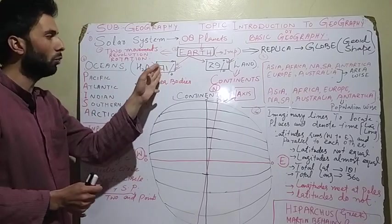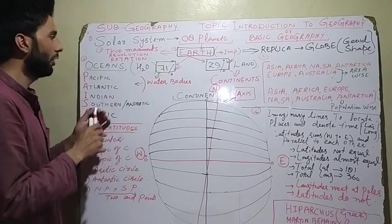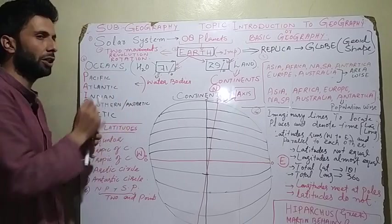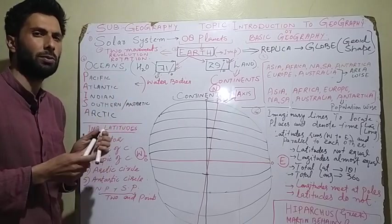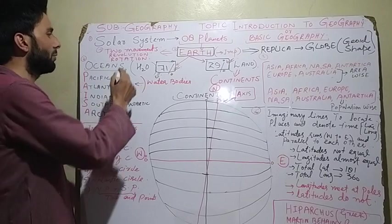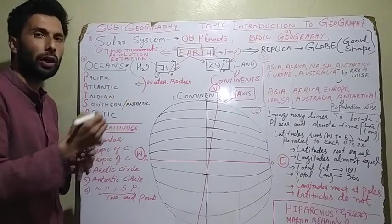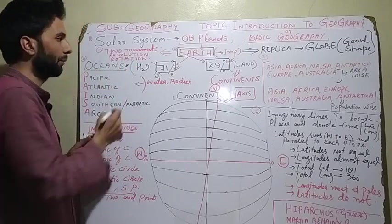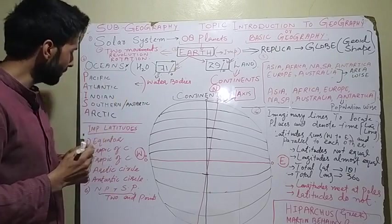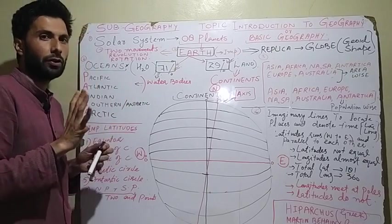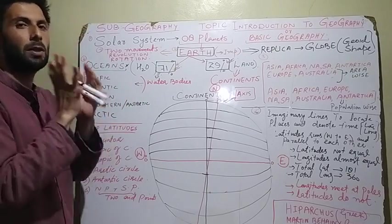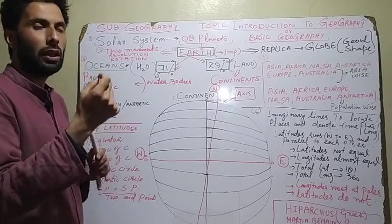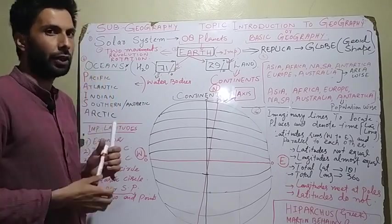Now let's talk about water bodies, which cover 71% of Earth's area. The most important water bodies we will discuss are the oceans. There are five major oceans in the world.